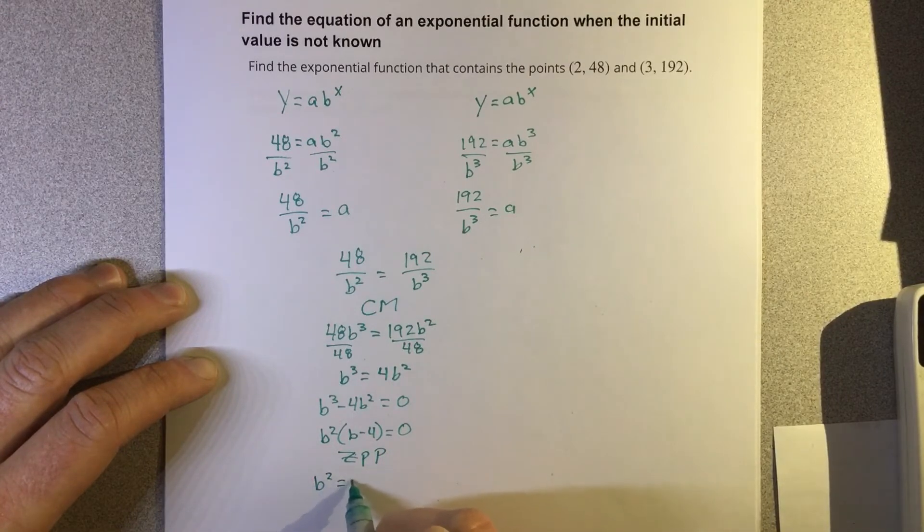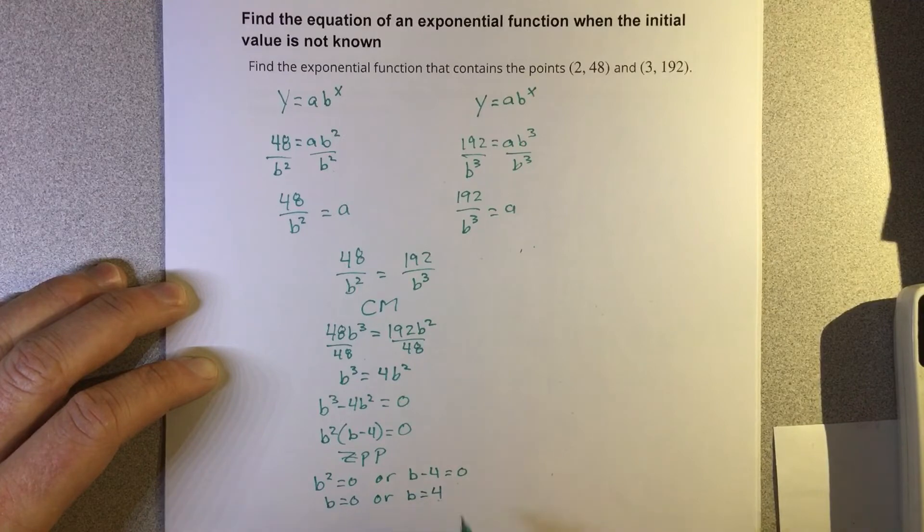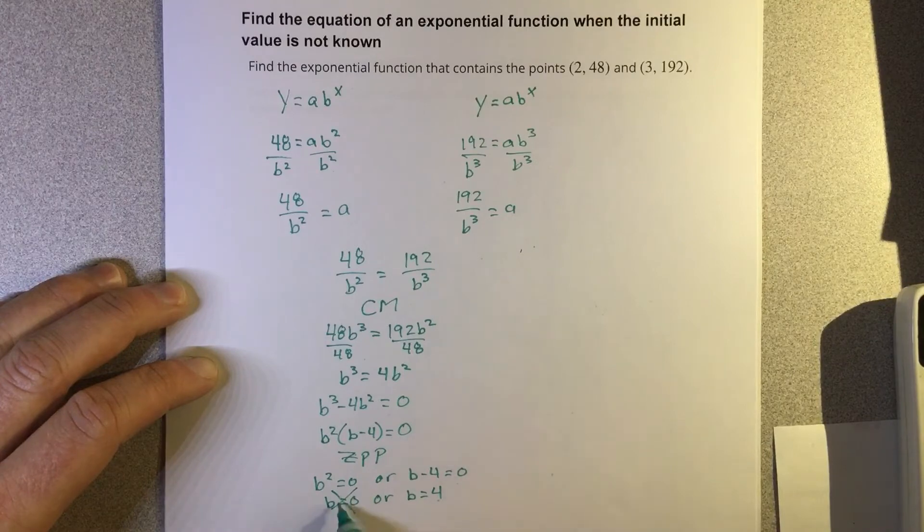b squared equals 0 or b minus 4 equals 0. So b equals 0 or b equals 4. We know that b has to be greater than 0 for an exponential equation, so b equals 0 is not a solution.